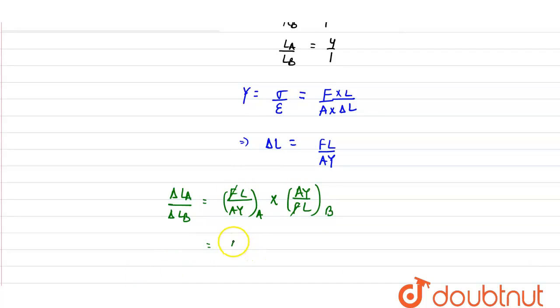So from here we get area of B divided by area of A multiplied by Young's modulus of B divided by Young's modulus of A multiplied by length of A divided by length of B.